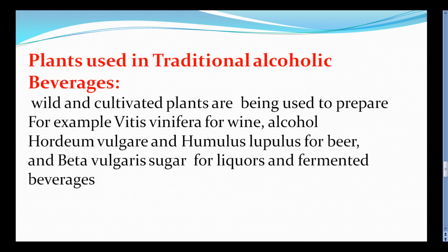Plants used in traditional alcoholic beverages: both wild and cultivated plants are used to prepare these beverages. For example, Vitis vinifera is used for wine. Hordeum vulgare and Humulus lupulus are used for beer. Beta vulgaris sugar is used for liquors and fermented beverages.